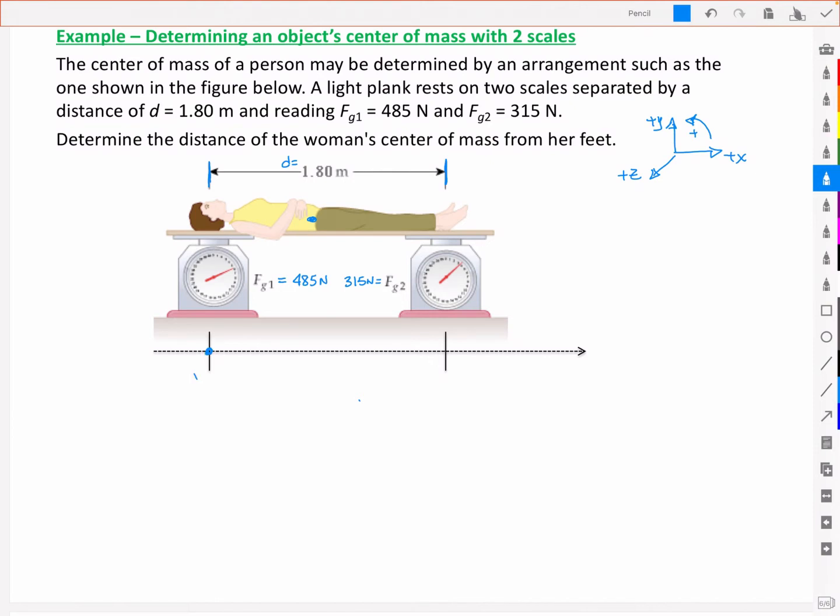We're going to define this point here as the zero point, so x equal to zero. Then somewhere within here we have the x center of mass. And lastly at this distance here we have x equal to d which is equal to 1.8 meters.